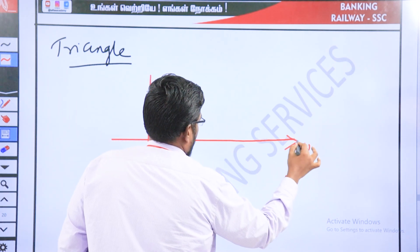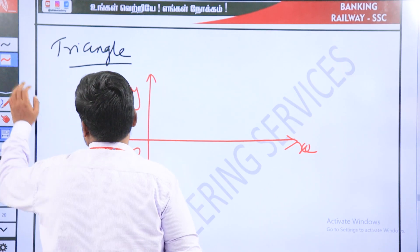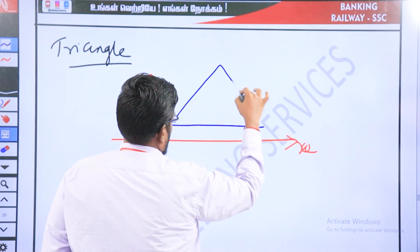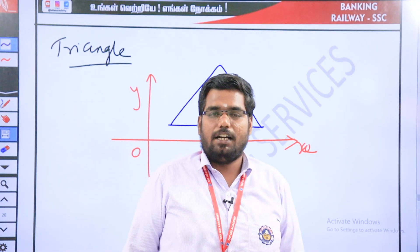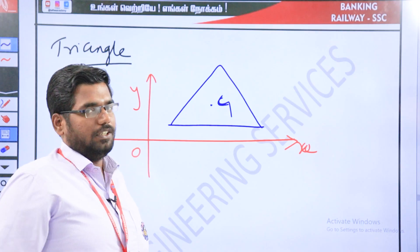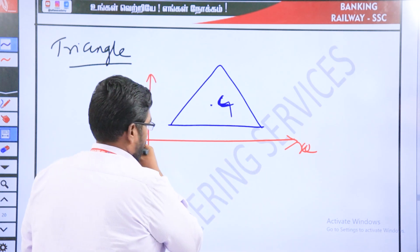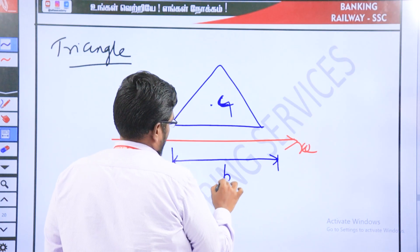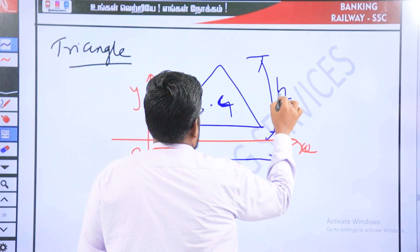One graph — x-axis, y-axis. There is one triangle on the graph. Center of gravity — C here. Center. There is a weightless lamina, but here is CG. What is a triangle? There is a base. There is a height. What direction is x-bar and y-bar?